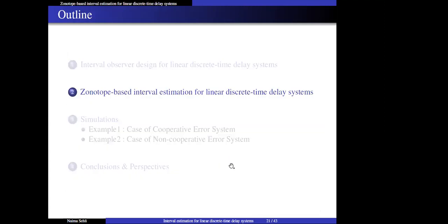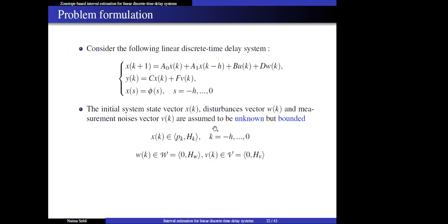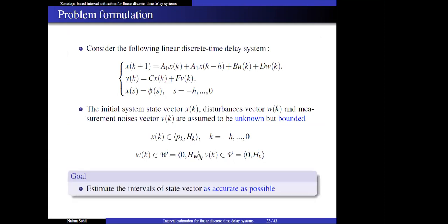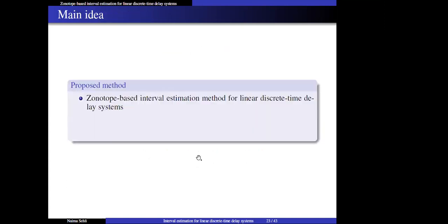Now we present the zonotope-based interval estimation for linear discrete time delay systems. We consider the same linear discrete time delay system, but now the initial state vector, disturbances, and measurement noise are associated with zonotopes, where p_k, H_k, H_w, and H_v are known vectors and matrices. Our goal is to estimate the interval vector containing the real state vector as accurately as possible. We propose a zonotope-based method divided into three steps: first, a pointwise observer is designed via H-infinity formalism; then, zonotope sets are introduced to represent and propagate reachable sets; and finally, interval estimation is achieved based on outer-box approximation.